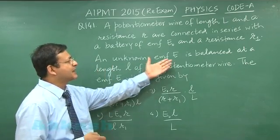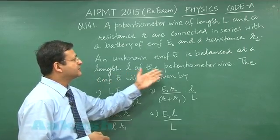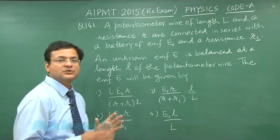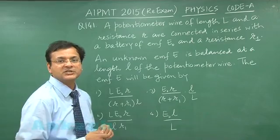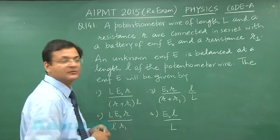Now an unknown EMF E is balanced at a length small l of the potentiometer wire. So first you should find out what is the potential drop against this entire length of the potentiometer wire.